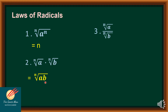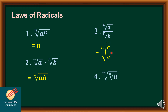The third law: if we have the n-th root of a divided by the n-th root of b, since the index is the same, I can rewrite this as the n-th root of a over b. The fourth law: if we have the m-th root of the n-th root of a, I simply multiply m and n. That product becomes the index, so we have the mn-th root of a.